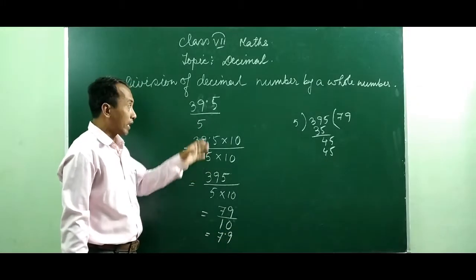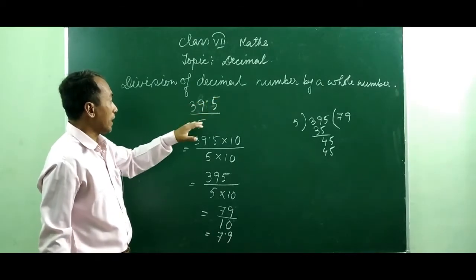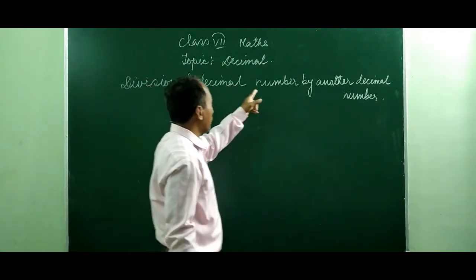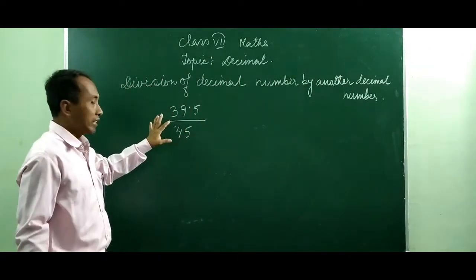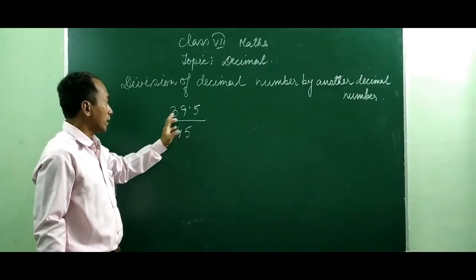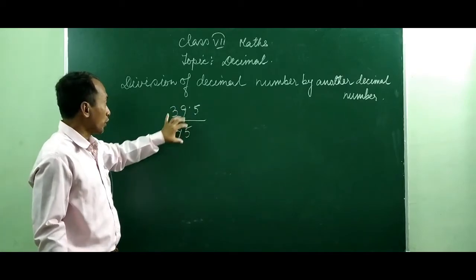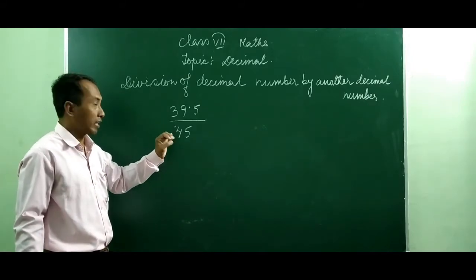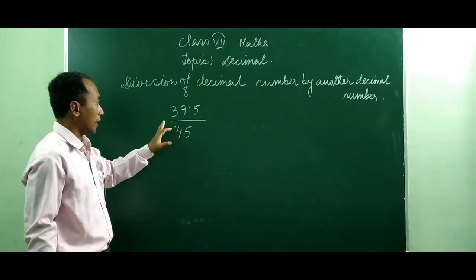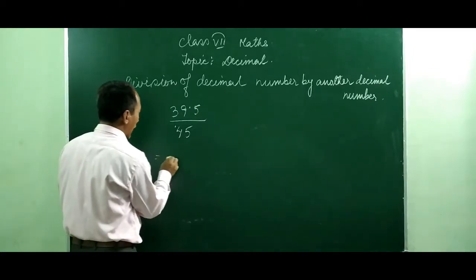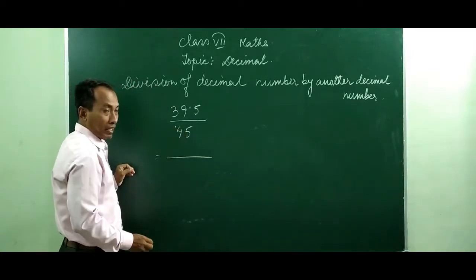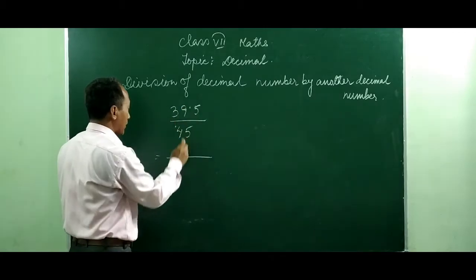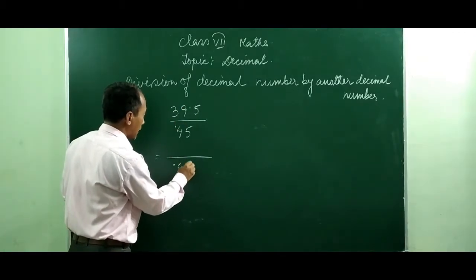In this way you can solve a decimal number divided by a whole number. Next we are going to study division of a decimal number by another decimal number. Here we take two numbers: 39.5 divided by 0.45 — both of them are decimal numbers. When both are decimal numbers, you see which number has more digits after the decimal. The denominator has two digits after the decimal and the numerator has one digit after the decimal. So to remove the decimal we have to multiply the denominator by 100.